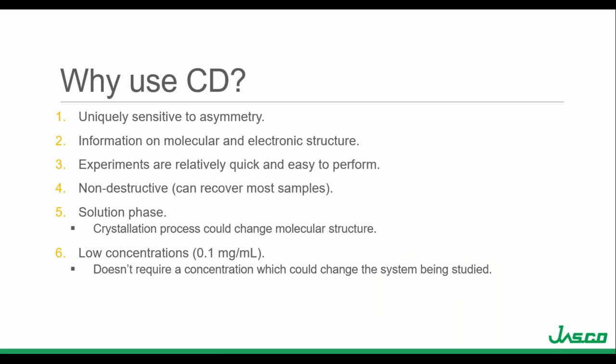CD is uniquely sensitive to a molecule's asymmetry and provides information on the molecular and electronic structure. The experiments are relatively quick, easy to perform, and non-destructive, so unless you're doing an irreversible denaturation measurement, most samples can be recovered. It's done in solution phase, so the crystallization process could potentially change a molecular structure — by doing it in solution phase, we avoid this. CD measurements can also be done on thin films and solid samples, and it uses low concentration, roughly 0.1 mg per ml.